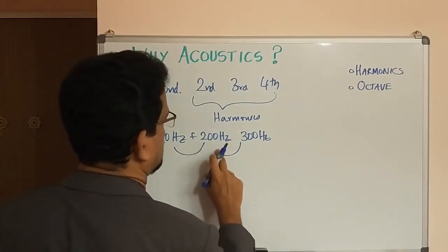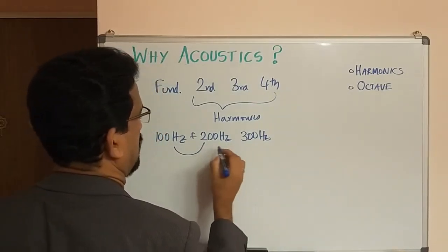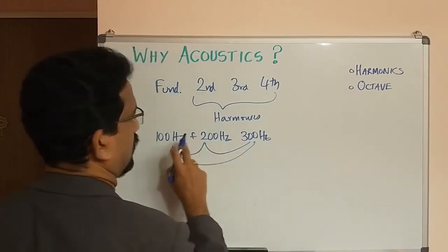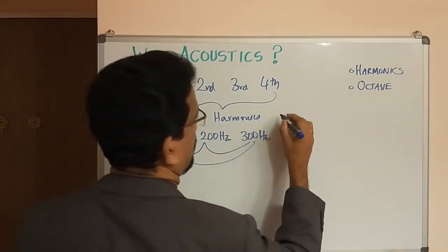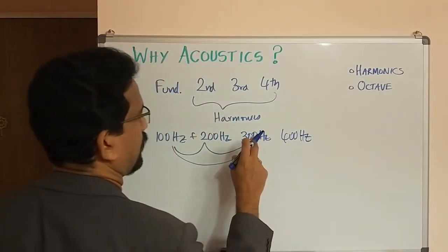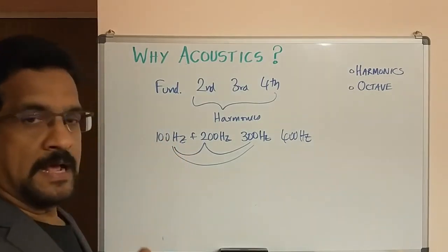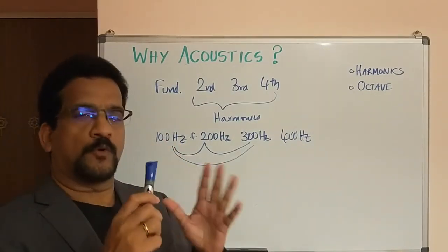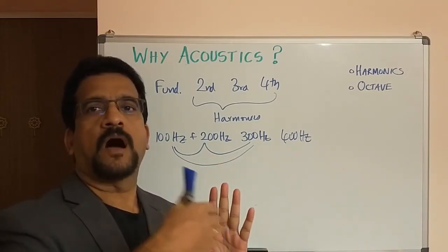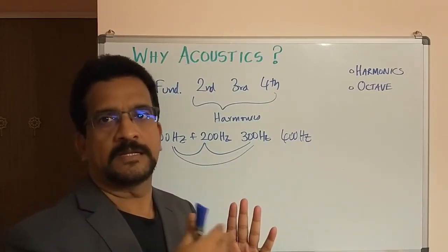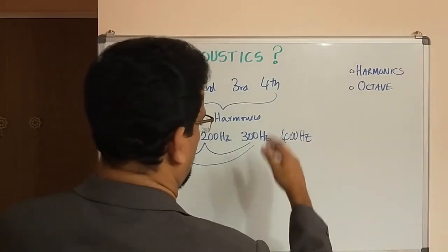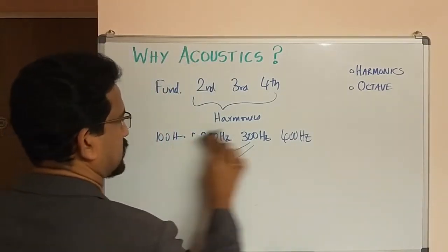To make it simpler: the fourth harmonic is the addition of the previous steps — 400 Hz — which is the sum. So when you produce a single frequency of 100 Hz, it is going to have multiple harmonics. That is how nature produces harmonics. This is how the harmonics of a particular sound are going to be.